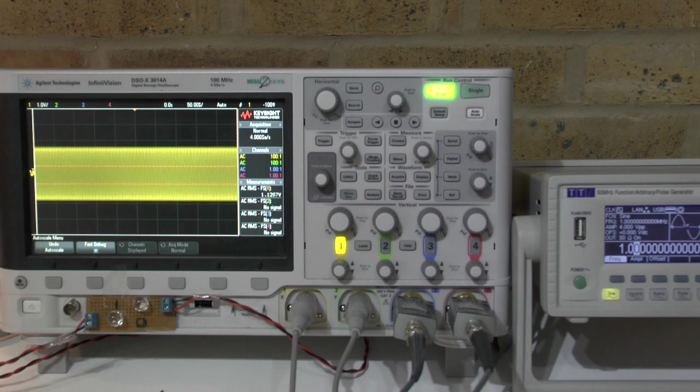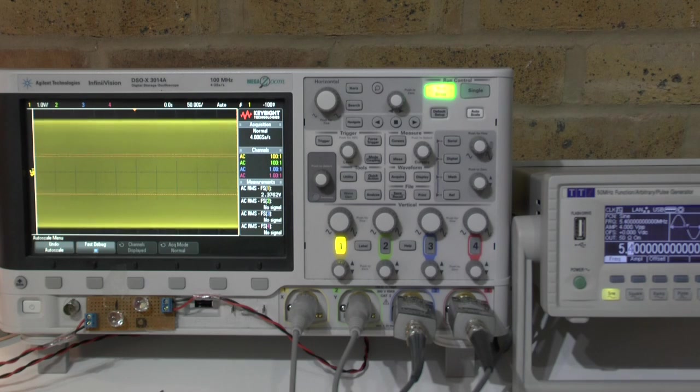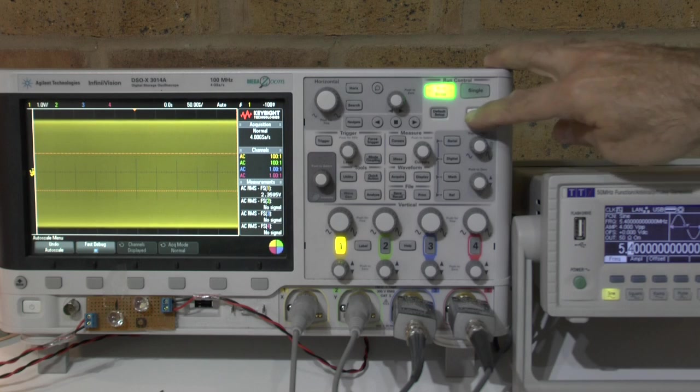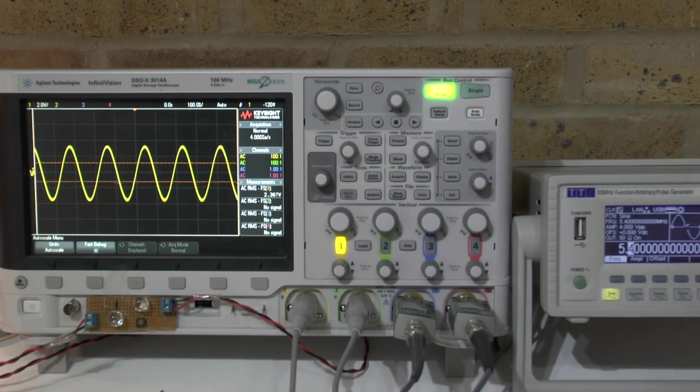Let me zoom out for you here so that you can see it easier. I am at 5.4 MHz and we have 2.3, 2.4 volt RMS on the scope.